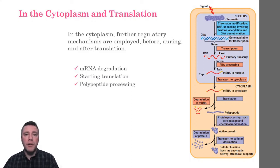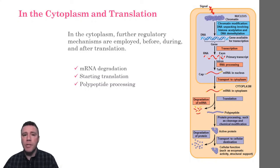Upon the completion of translation, polypeptides often undergo physical or chemical modifications. One such example of a physical modification involves the initial polypeptide for insulin. That polypeptide is cleaved into smaller segments, forming the active hormone. Many proteins undergo chemical modifications, such as the addition of cofactors or coenzymes. Also, the length of time that a protein functions in a cell is regulated by mechanisms of selective degradation. To tag proteins for destruction, the cell attaches small protein molecules to them, which identifies them for destruction by intracellular enzymes.